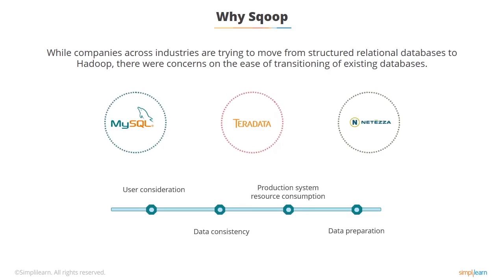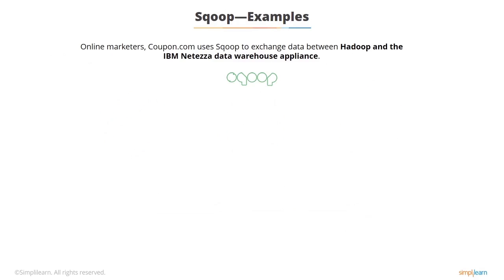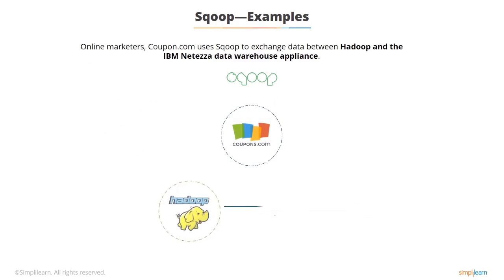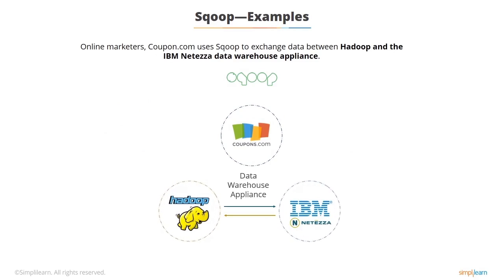Sqoop allows smooth import and export of data from structured databases. Along with Oozie, Sqoop helps in scheduling and automating import and export tasks. In real life, Sqoop can be used by online marketers. Coupon.com uses Sqoop to exchange data between Hadoop and IBM Netezza Data Warehouse appliance. The organization can query its structured databases and transfer the results into Hadoop using Sqoop.